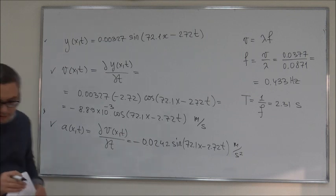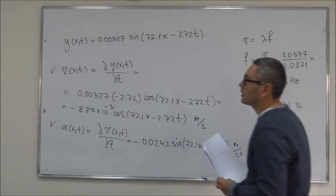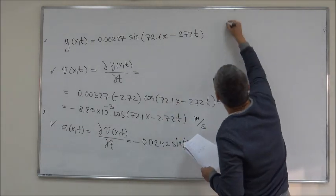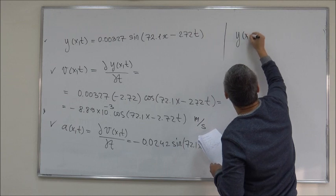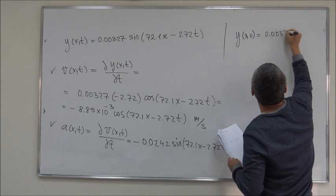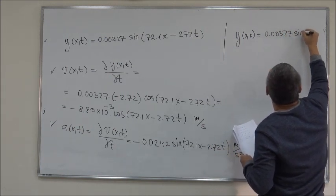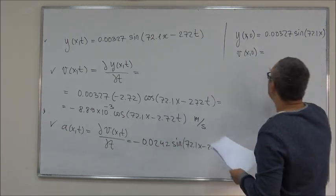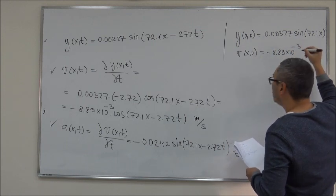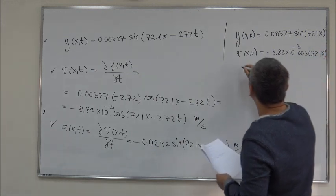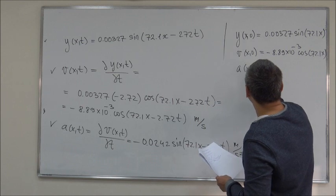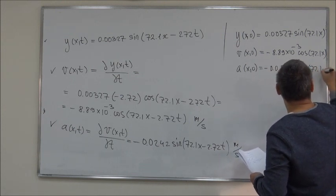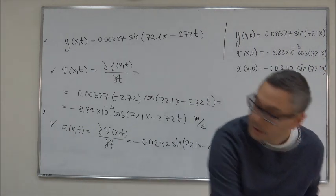So, by substituting for x and t, you can calculate instantaneous velocities and acceleration for any particle at any given instance of time. And the last thing now is to make a graph of position, velocity, and acceleration for time t equal 0. So, for time t equals 0...